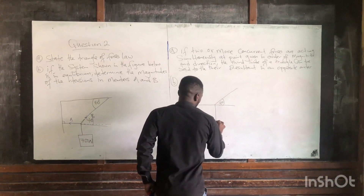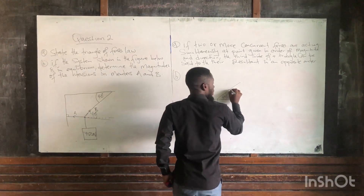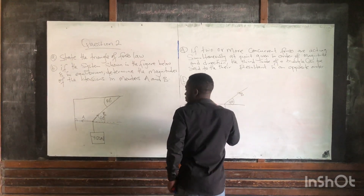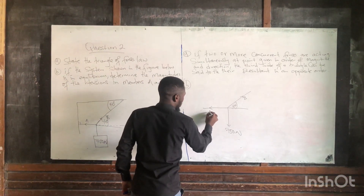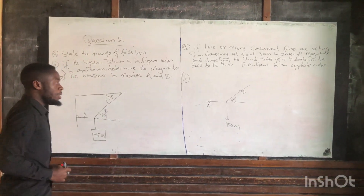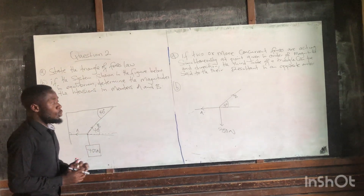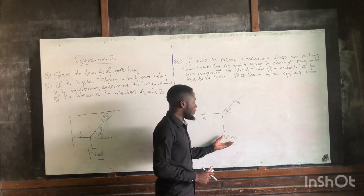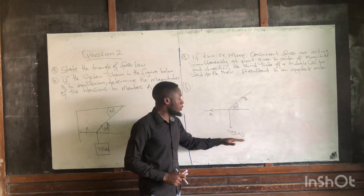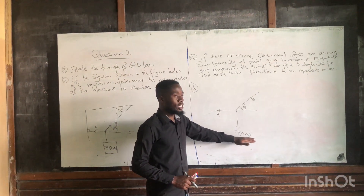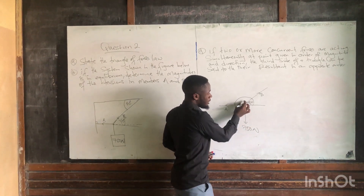Then here we have this force of 750 newtons. Here we have point B, this one would be at T, and this one would be at A. So the forces will be in this form. First, we need to find the angle opposite to this 750 newtons — which angle is opposite to this given weight? The angle opposite to this given weight is this angle here.